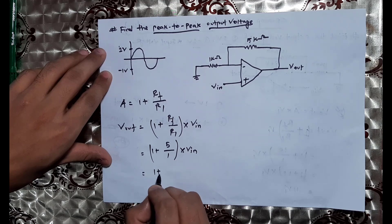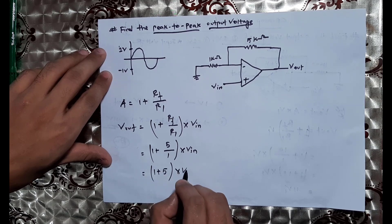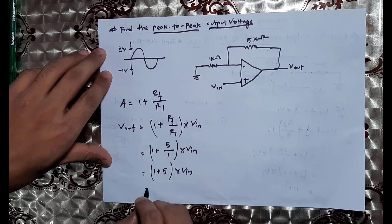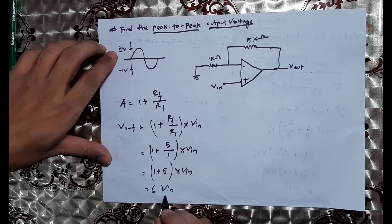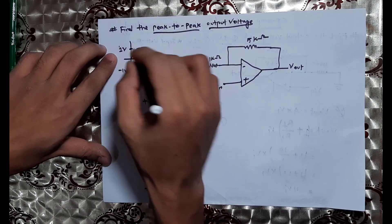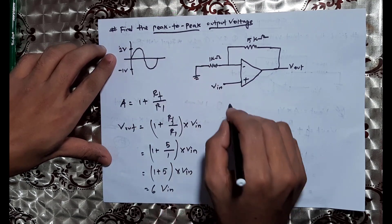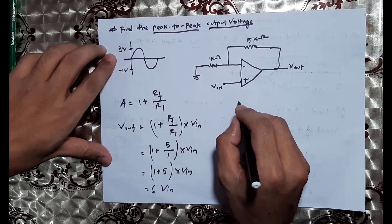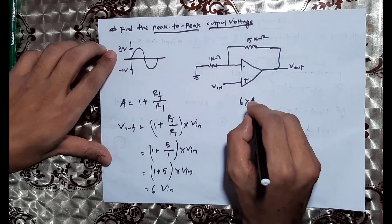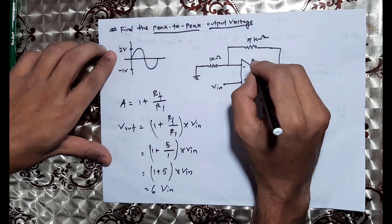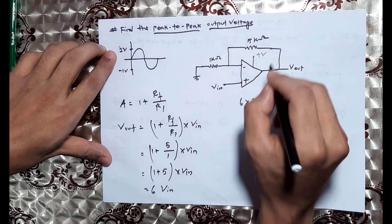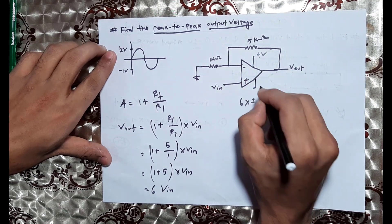So the gain is 1 plus 5 into Vin, that means 6 into Vin. The input voltage is equal to 1, which means 2 into 1.